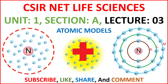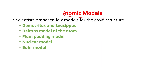Hello, welcome to our channel. In this lecture we are going to discuss atomic models. In the last lecture we discussed atomic number, isotopes, isoelectronics, and so on. Atomic models are a few propositions — models proposed by scientists to explain the structure of the atom. There are different types: the Democritus and Leucippus model, Dalton's model, the Plum Pudding model, the nuclear model, and Bohr's model.